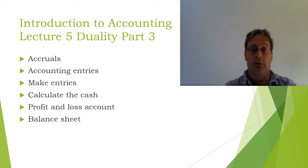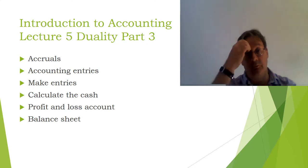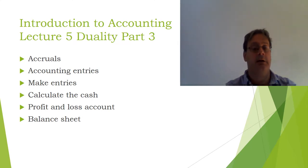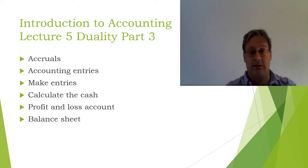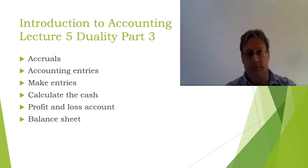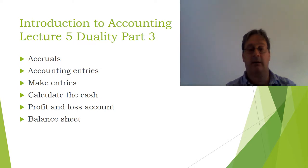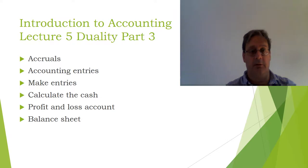We've got three examples here. For the transactions, we will record them as debits and credits. Then we will calculate how much cash we've got. Go back and have a look at the lecture if you don't understand why that's different from accruals — what is the accruals basis and what does it mean? Then we'll do the profit and loss account and the statement of financial position.